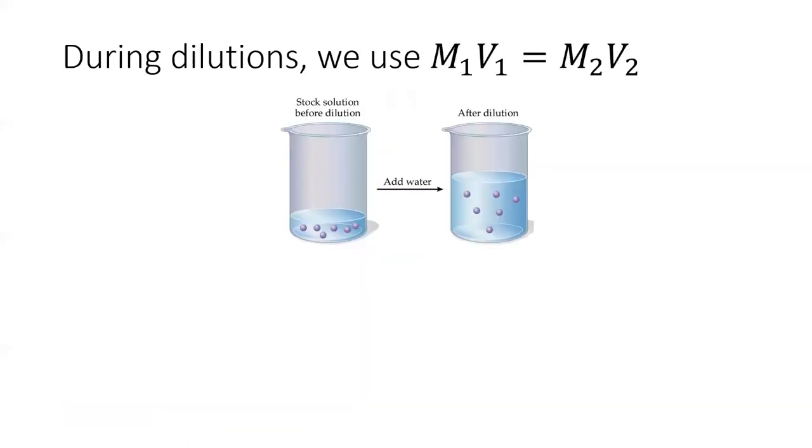Many times, you will be diluting a concentrated solution into one that is less concentrated, sort of like mixology. When we dilute, we use the equation M1V1 equals M2V2.